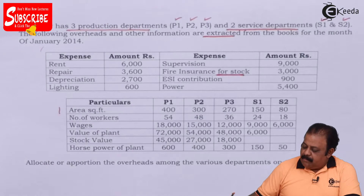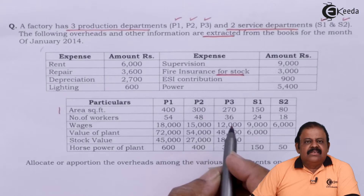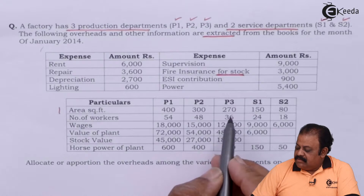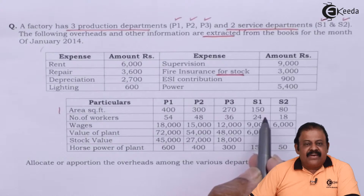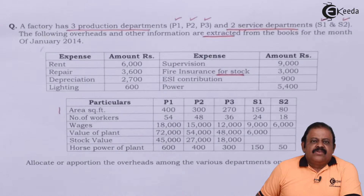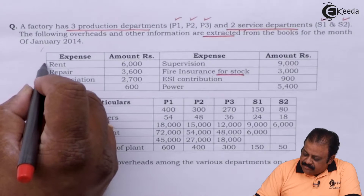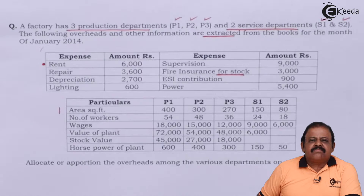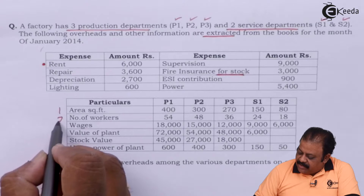Parameter one is floor area in square feet: P1 department 400, P2 department 300, P3 department 270, S1 150, and S2 80 square feet. Some expenses are directly based on floor area, so we can allocate them in the ratio of floor area occupied. For example, rent will be allocated based on floor area.